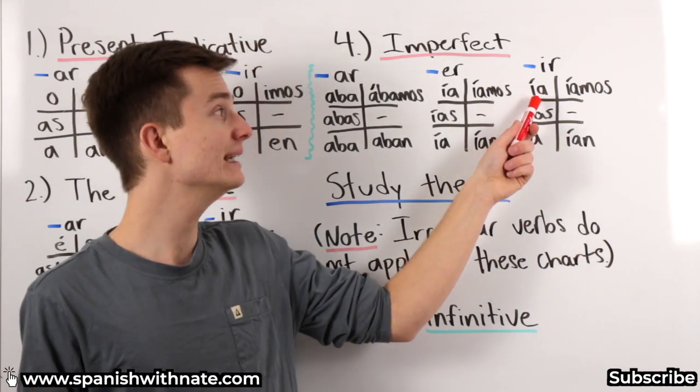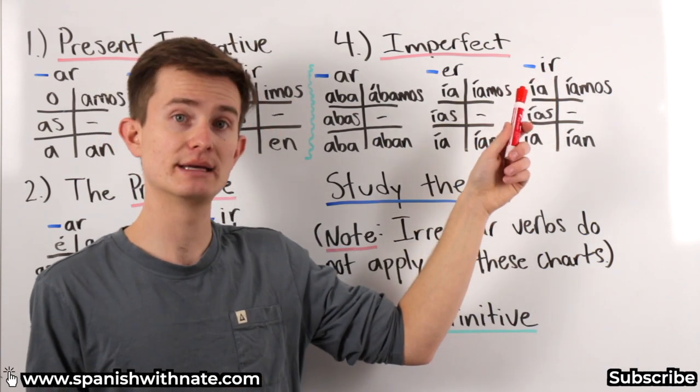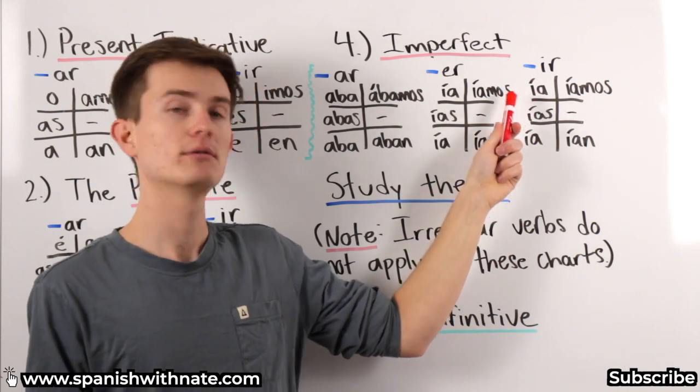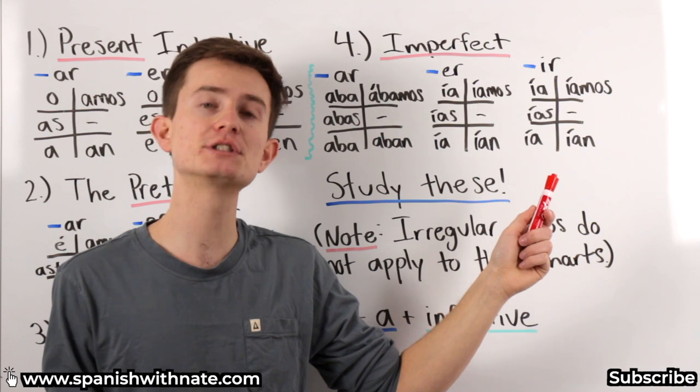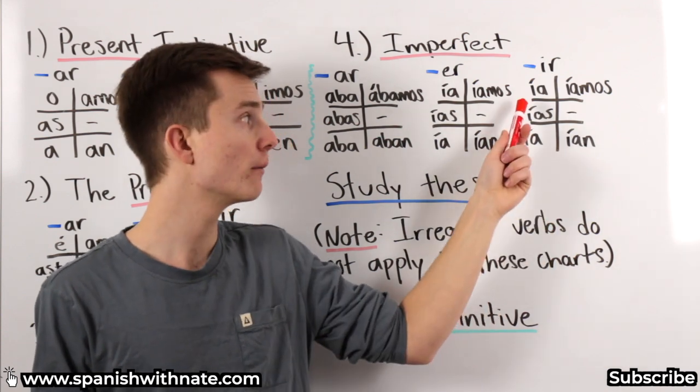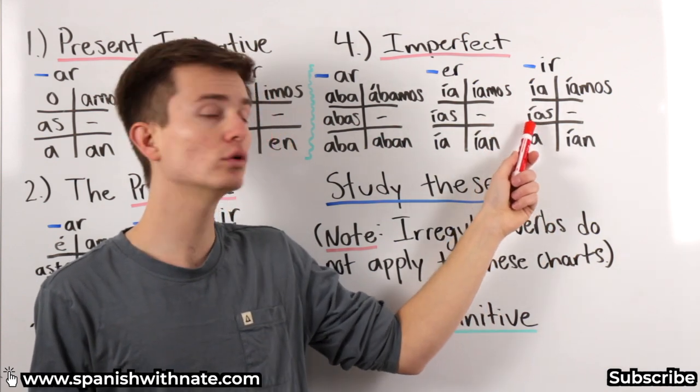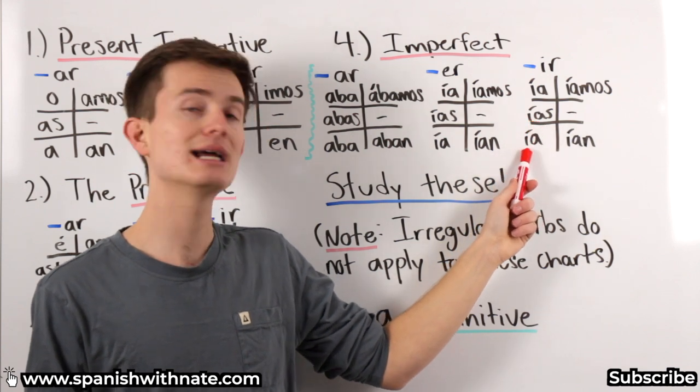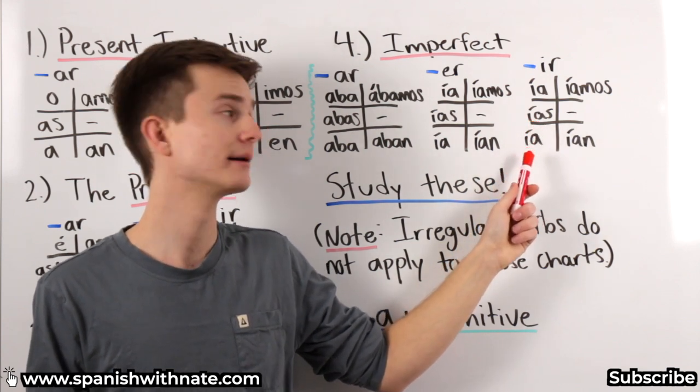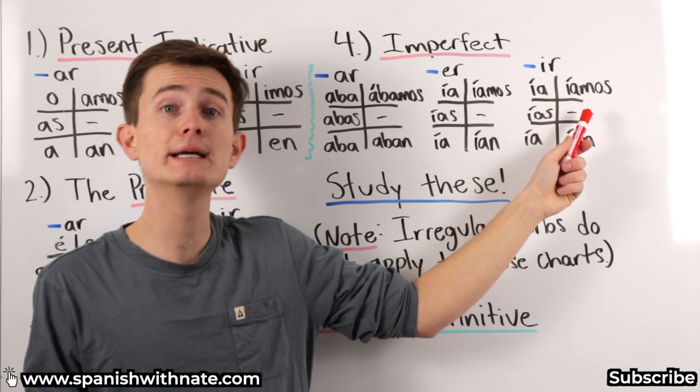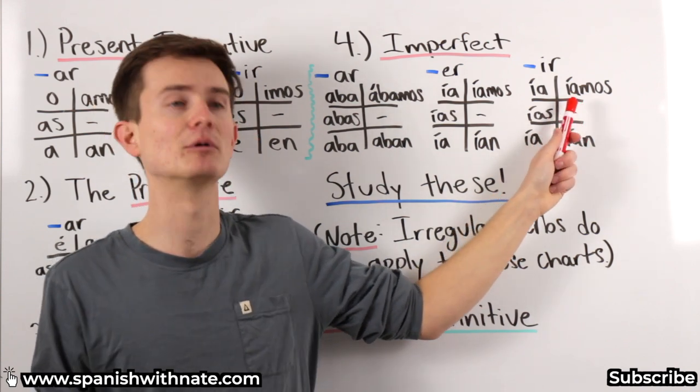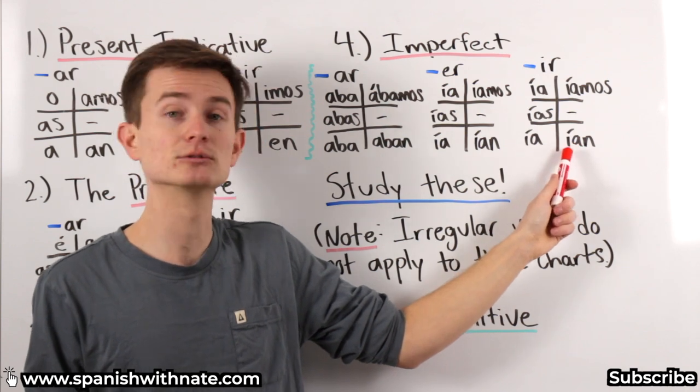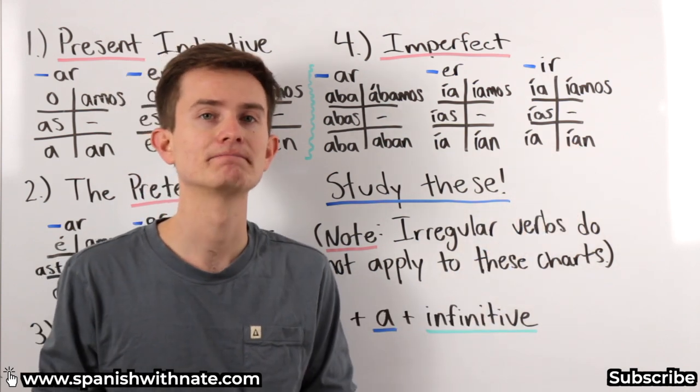Finally, ia. The IR in the imperfect tense. Yo vivía. I was living. Or, I used to live. Yo vivía. Tú vivías. Él, ella, usted vivía. Nosotros vivíamos. Vivíamos. Right? Notice the accent. Vivíamos. Ellos, ellas, ustedes vivían.